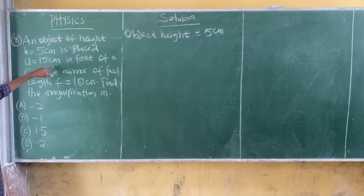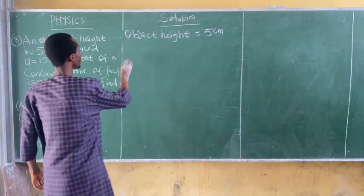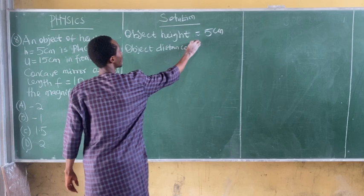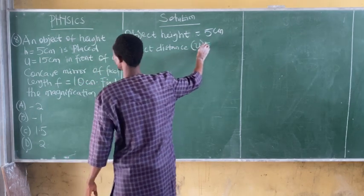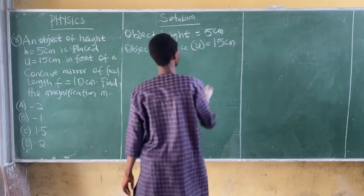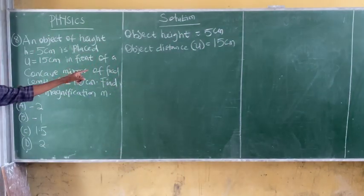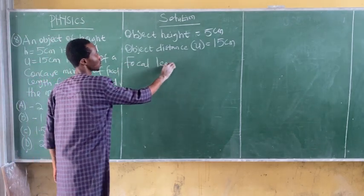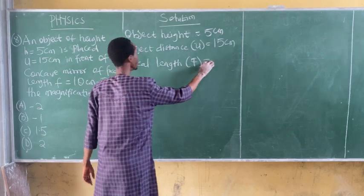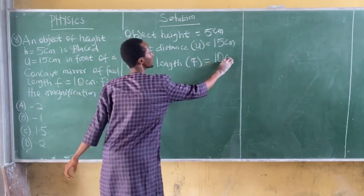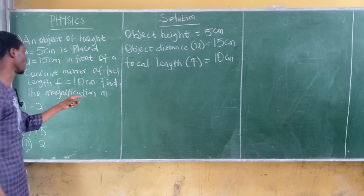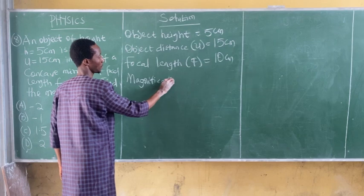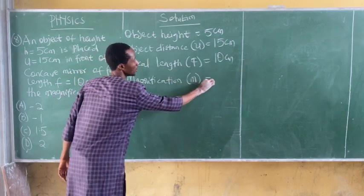We are also given the object distance, denoted U, to be 15 cm. It is in front of a concave mirror of focal length F equal to 10 cm. We need to find the magnification M, which is unknown.